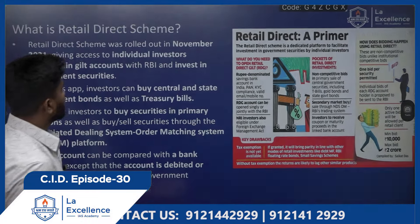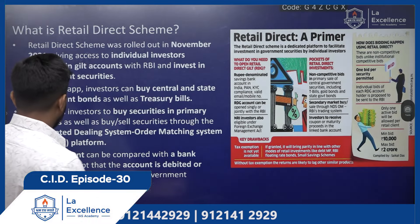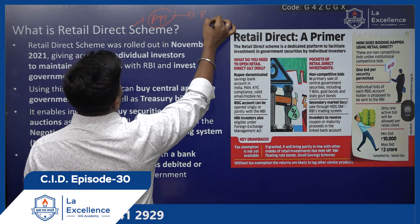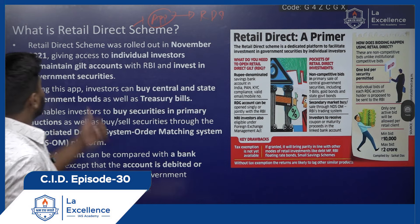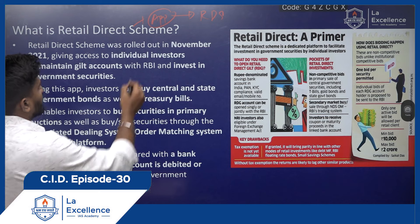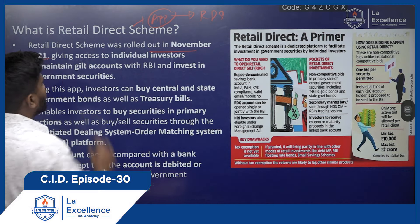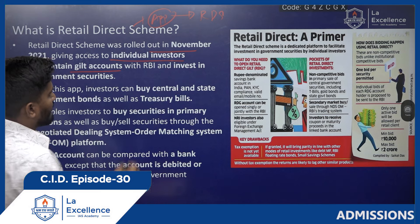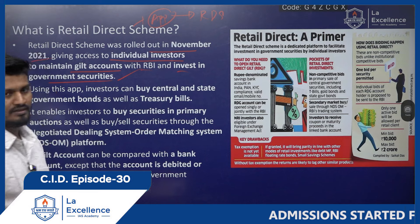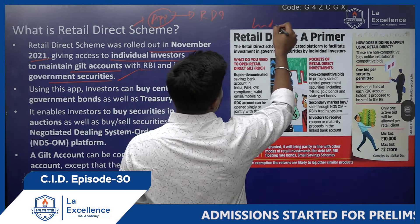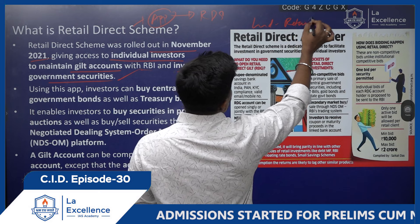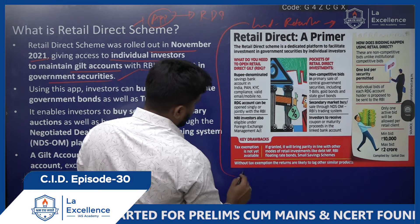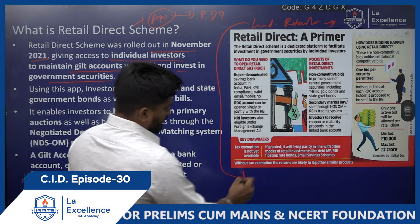Moving to the main topic: the Retail Direct Scheme was rolled out in November 2021. It gave individual investors access to maintain gilt accounts with the RBI and invest directly in government securities. Previously, individuals were not allowed to invest directly in gilt securities.